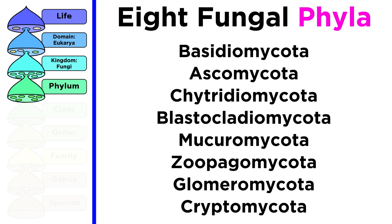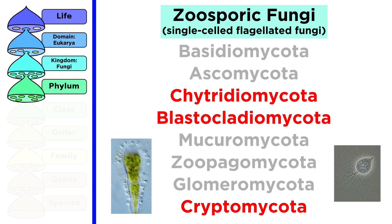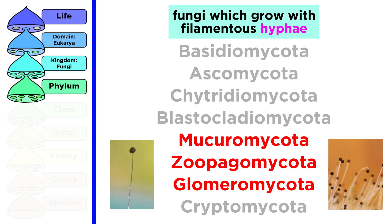There are individual characteristics within each of these phyla that allow us to differentiate between them, and we will discuss these as we move through the series. The chytridiomycota, blastocladiomycota, and cryptomycota contain all the zoosporic fungi, or single-celled fungi which possess a flagellum at some point during their life cycles. The phyla mucuromycota, zoopagomycota, and glomeromycota contain fungi which have lost the flagellum, but have developed the ability to grow with filamentous hyphae.